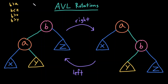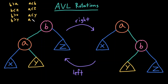Looking at node A: we know A is less than B, A is less than Z because Z is larger than B and B is larger than A, therefore Z is larger than A. We know A is less than everything in Y because Y is the right subtree of A, and we know A is greater than X.